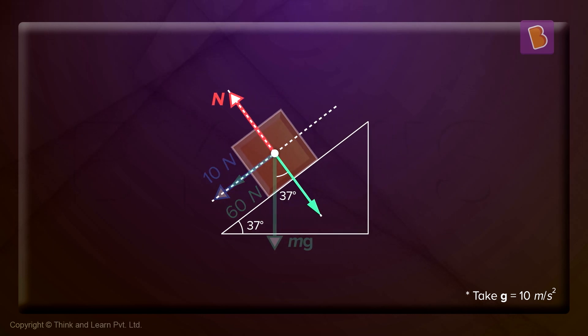Now, let's go to the y-axis. In the y-axis, you have only the normal reaction acting upwards and you have a component of MG acting that way, right?